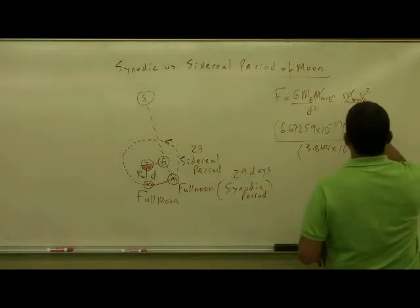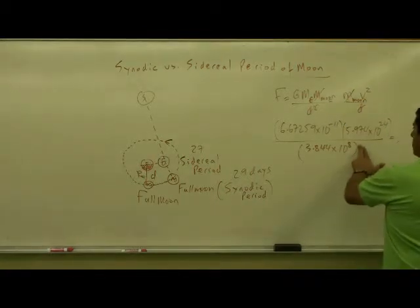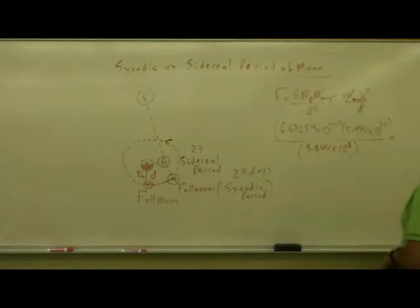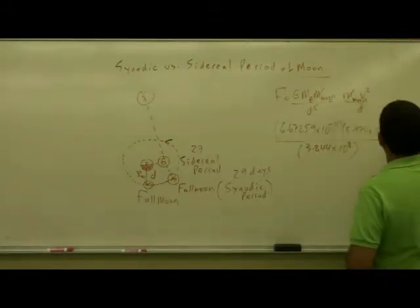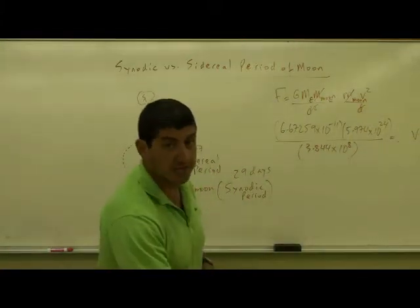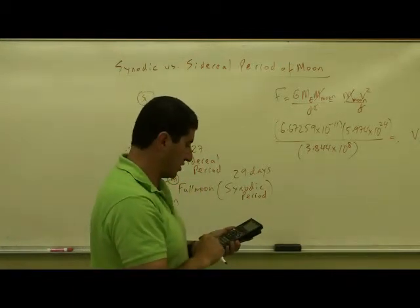Well, what's going to happen if you put here D? The D is going to cancel one of the Ds, so I don't even have to square this. So now this is going to equal the velocity squared. So this is going to tell us the orbital velocity of the Moon as it's going around the Earth.